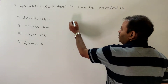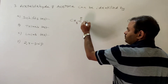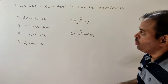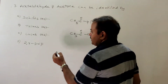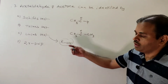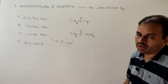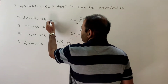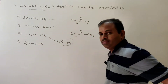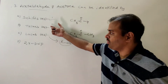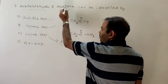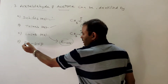Third question: acetaldehyde (CH3CHO) and acetone (CH3COCH3) can be identified by which reagent? Lucas test is used to identify alcohols, not carbonyl compounds. Schiff's test and Tollens' test can identify only aldehydes — we can identify acetaldehyde with Schiff's and Tollens' test, but not acetone.